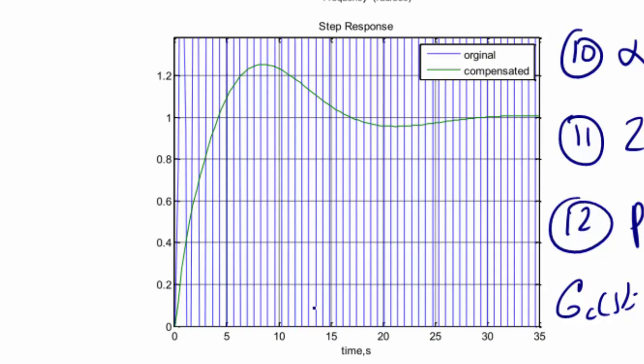The other thing you should notice here is the step response of this system before and after compensation. The original system was actually unstable, which is what these wiggle spikes are showing you here, and the compensated system is now stable.